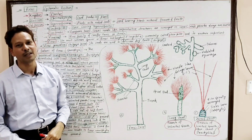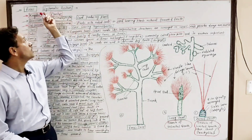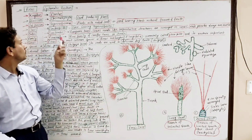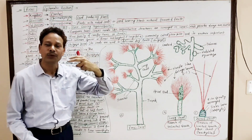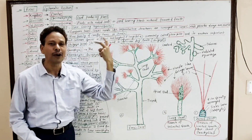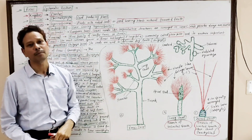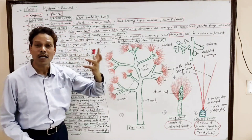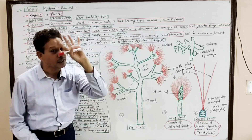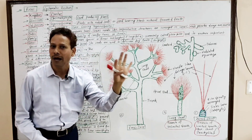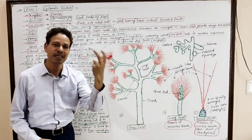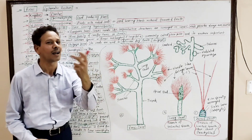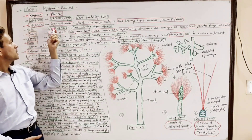This is an important question for BSc second-year final exams. The systematic classification of Pinus: Kingdom Plantae, Division Spermatophyta — 'sperma' means seed, 'phyta' means plant, so these are seed-producing plants. Subdivision Gymnospermia — these plants produce seeds, but the seeds remain naked. There are no flowers and no fruits.